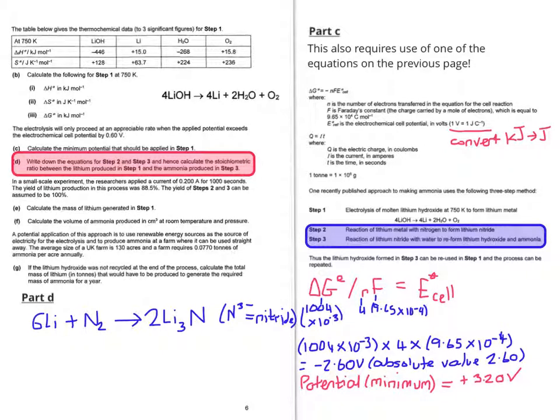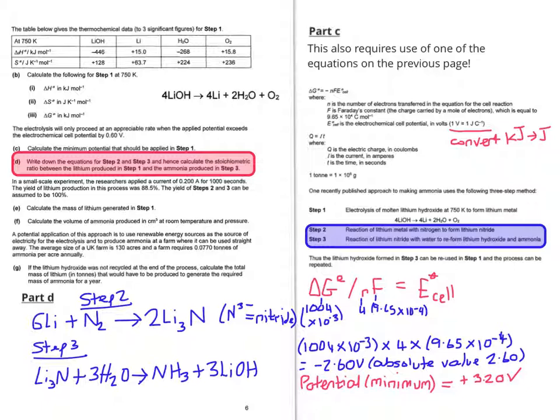So working from the premise that the nitride ion is N³⁻, you end up with 6Li + N₂ giving you 2Li₃N to do step 2. So this allows us to work out the equation for step 3 as well: Li₃N + 3H₂O giving you NH₃ + 3LiOH. So the mole ratio you're looking for for lithium to ammonia is 3 to 1.